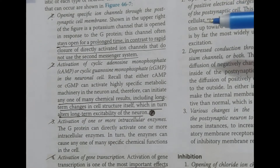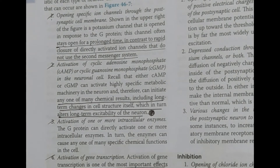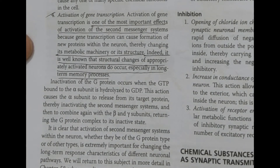The second function is activation of cyclic adenosine monophosphate (cAMP). The cyclic monophosphate ends up going to a highly specific metabolic machinery, leading to long-term changes in the structure of the cell. The third function is activation of one or more intracellular enzymes, which perform specific chemical functions in the cell. The fourth and most important function is activation of gene transcription.